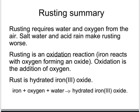Rusting is what's known as an oxidation reaction. The iron oxidises, or gains oxygen, to become iron oxide. But because water is also necessary, it makes what's called hydrated iron 3 oxide. The chemical equation is: iron plus oxygen plus water makes hydrated iron 3 oxide.